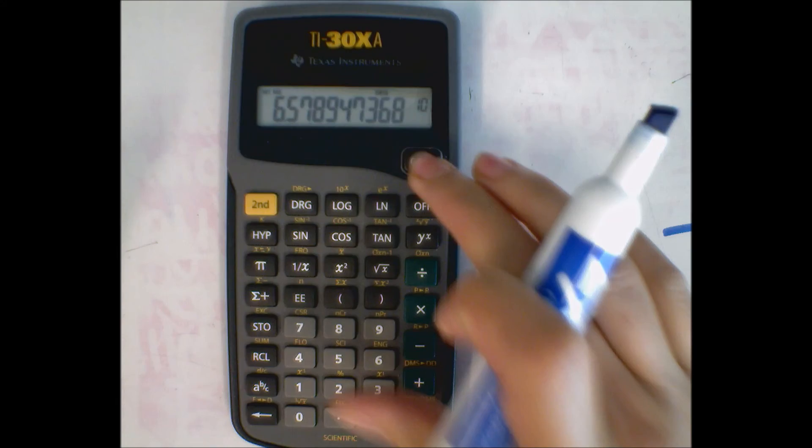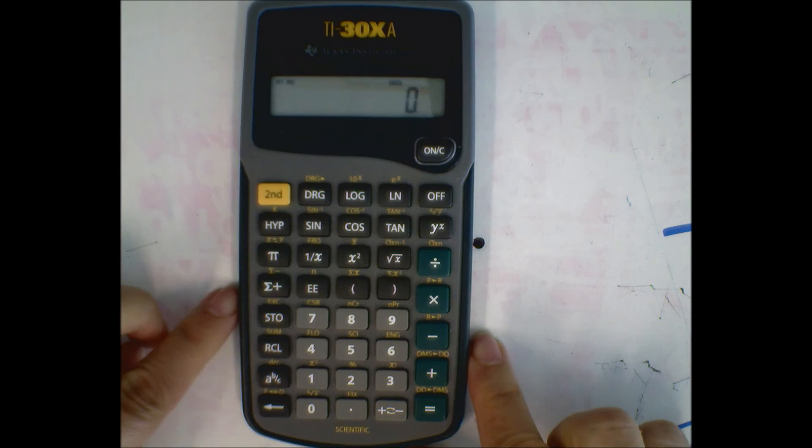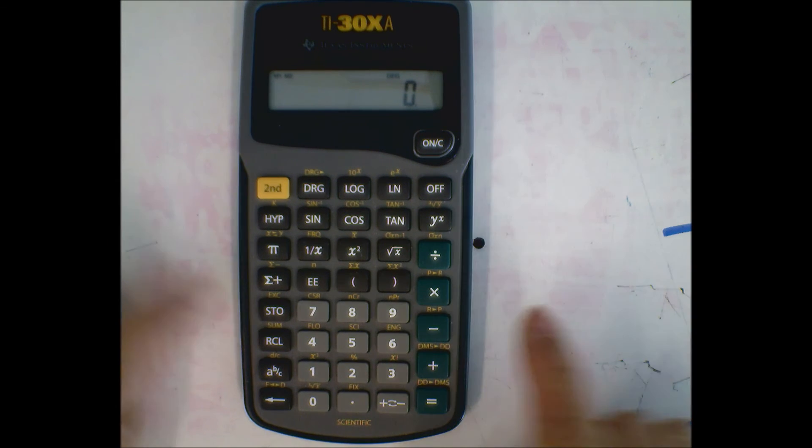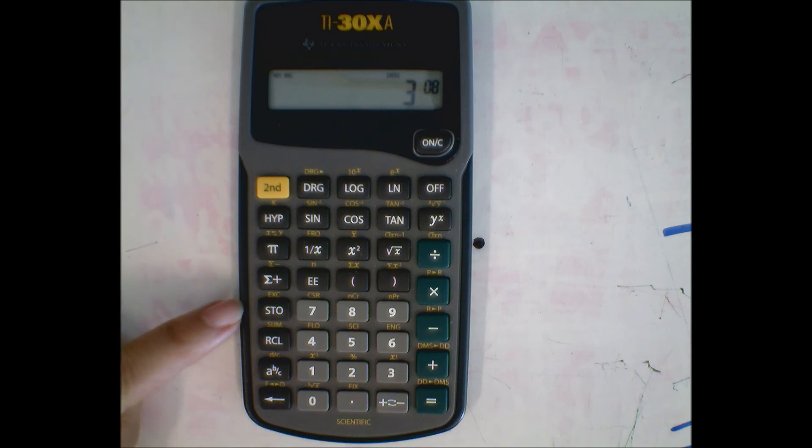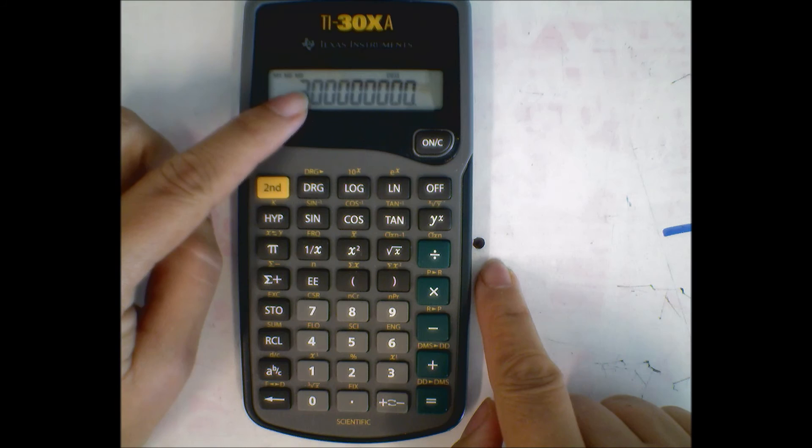The other cool thing about these calculators is that you have a memory key, which is what store is for. That's what STO stands for. If we use 3 times 10 to the 8th a lot, I can go 3 EE 8, and I can go store. I'm going to put 3, and if you notice, I got an M3 there.